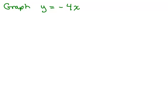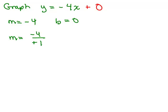Here's another problem: graph y equals negative 4x. Identify the slope and y-intercept. The slope is negative 4. The y-intercept isn't written, but if you put in 0 for x, y equals 0, so b is 0 — it crosses the y-axis at the origin. Write the slope as a fraction: either negative 4 over positive 1, or positive 4 over negative 1.